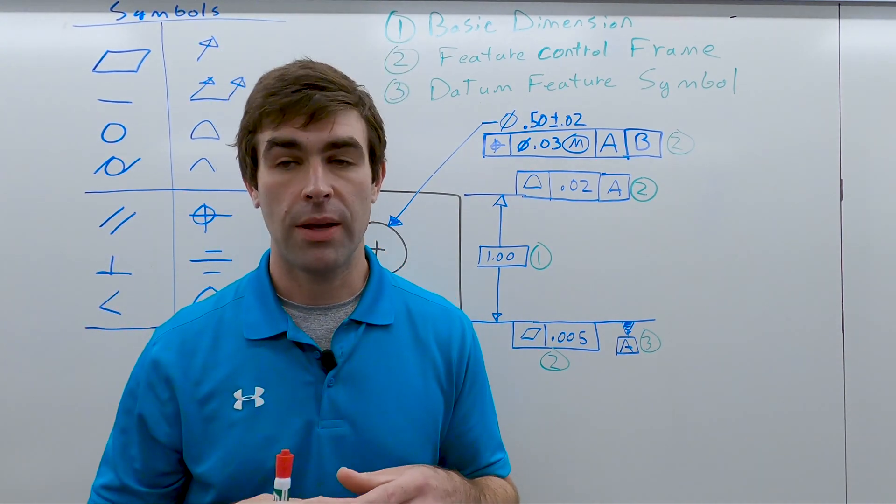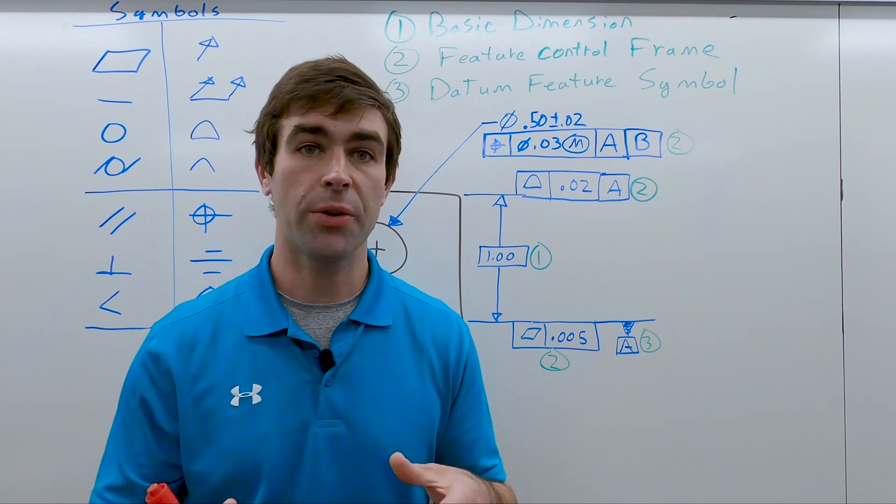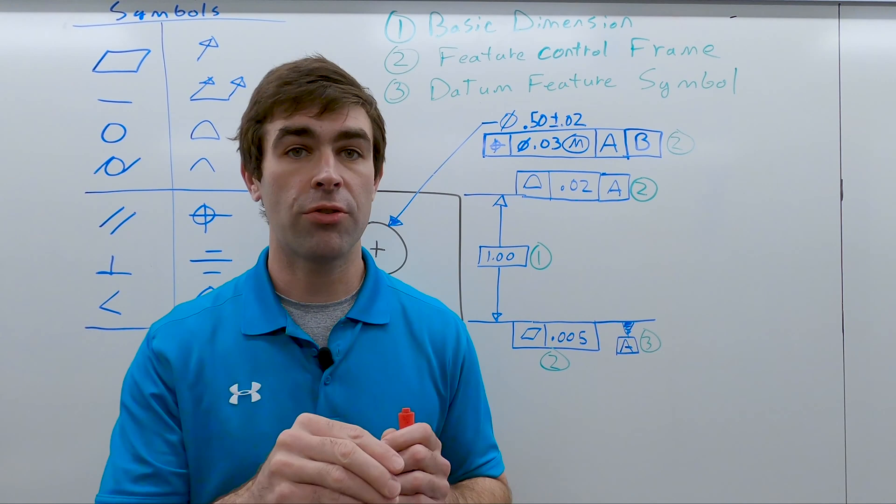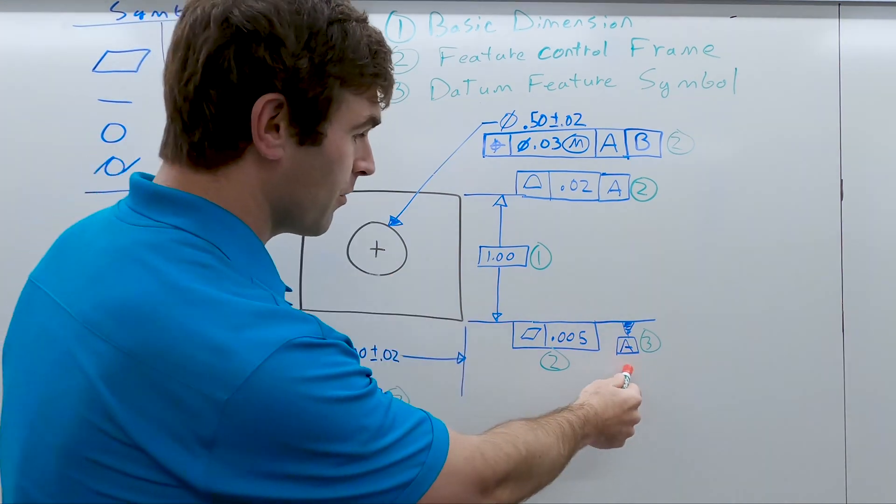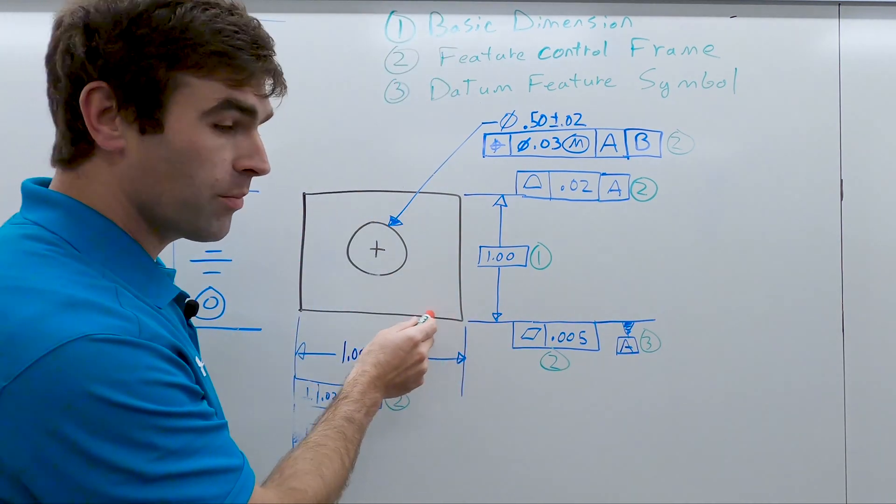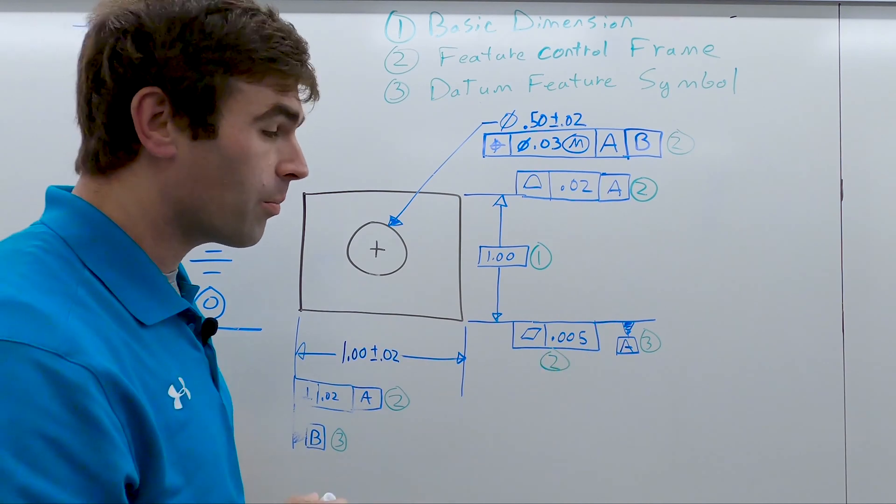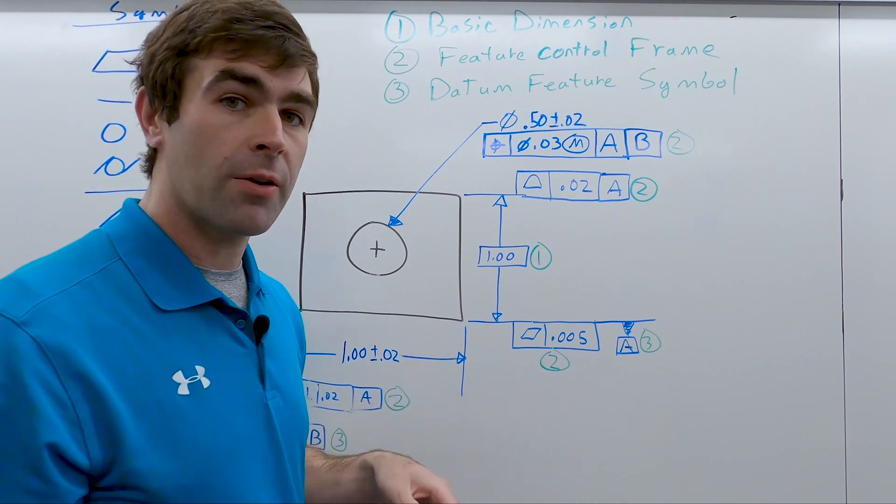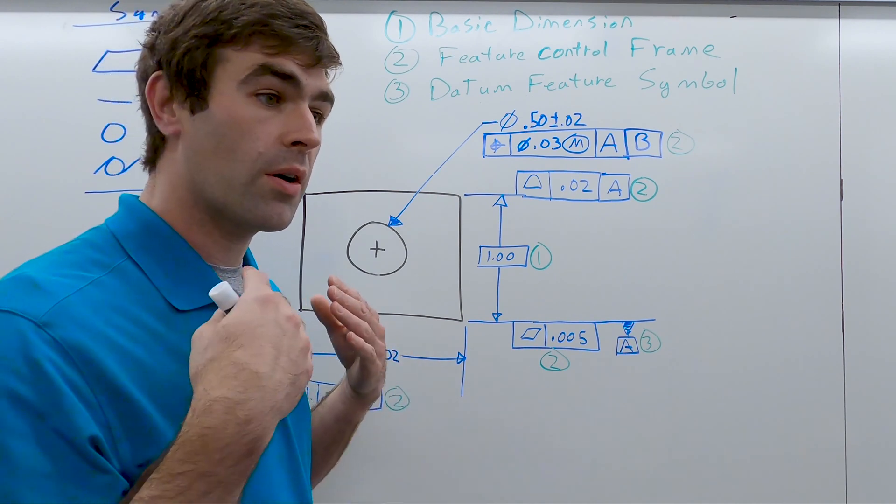The same thing can happen if we have a hole or a cylinder that's a datum feature. We might grab it with a mandrel or grab it with a chuck. Datum feature symbol leads to datum features, which is a physical portion of the part that develop datums, which are theoretical points, lines, or planes.